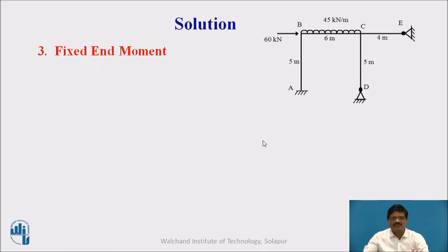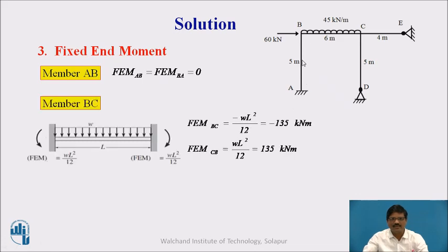Then we need to calculate the fixed end moments. For member AB, since we don't have any load on this member, it is 0. For member BC, we have UDL, so we know it is WL²/12.